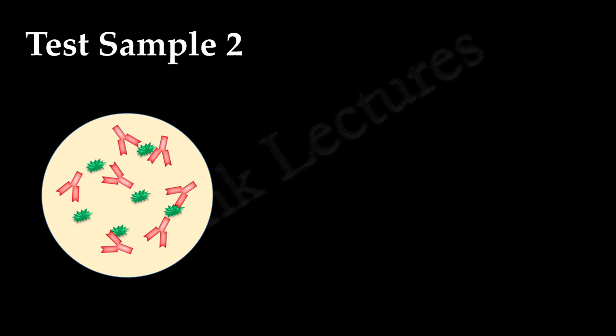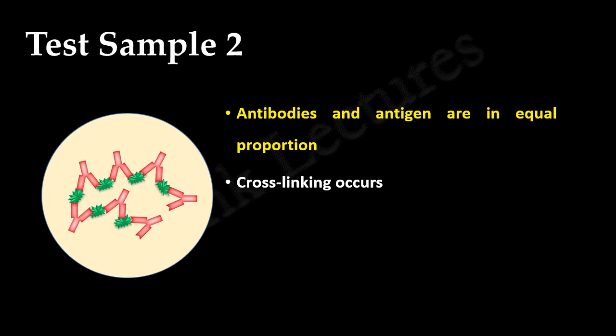In case of second test sample, antigen and antibody molecules are in optimal concentrations. The number of antigenic epitopes and antibody combining sites is approximately equal. Each antigen is shared between two antibodies and cross linking occurs. This results in the formation of insoluble lattice. This can be seen as visible precipitate. There are no free antigen or antibody molecules.